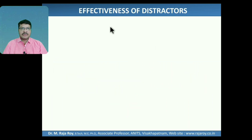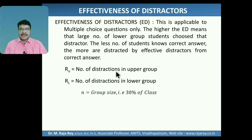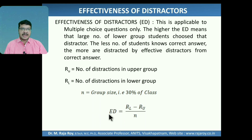The next parameter is effectiveness of distractors. In multiple choice questions, the correct answer is supposed to be A, but option C is just similar to the correct answer and it is distracting the students — that is called a distractor. RU is how many students in the upper group are writing the distractor as the correct answer. RL is the number of students selecting the distractor as the correct answer in the lower group. N is the group size, and effectiveness of distractor ED equals RL minus RU divided by N.